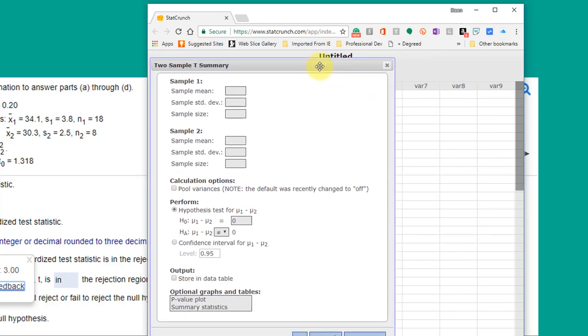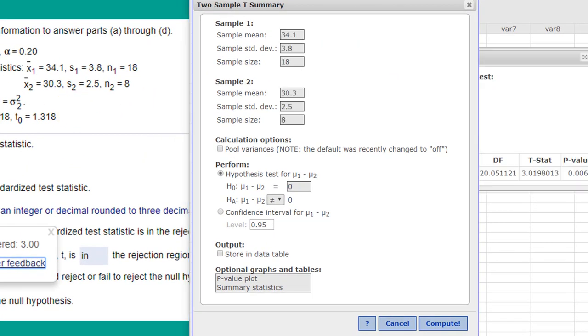We bring up this dialog box, and we just enter the data, and here I have the data entered. One thing you need to be aware of is this calculations options there, and it says pool variances, which is not clear to a lot of folks. If the variances are equal, you need to pool the variances. They have a note here that this default was recently changed to off. In the past, and I think in some of my videos, the default was already checked.